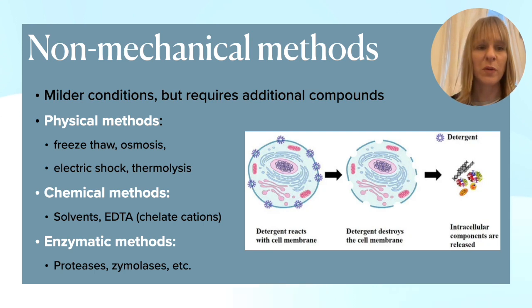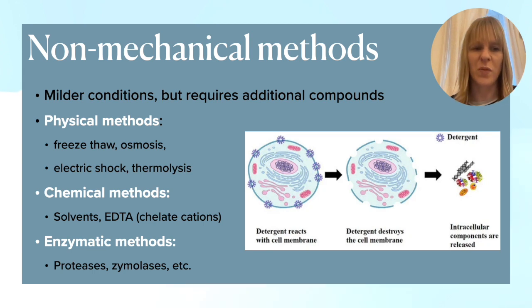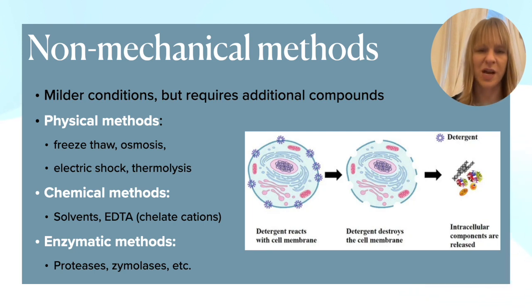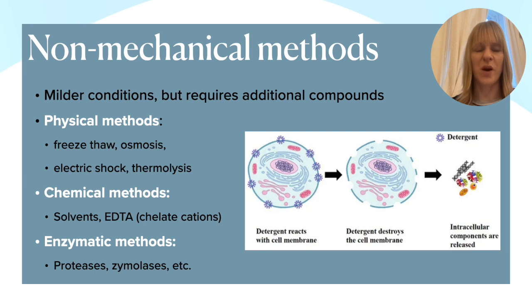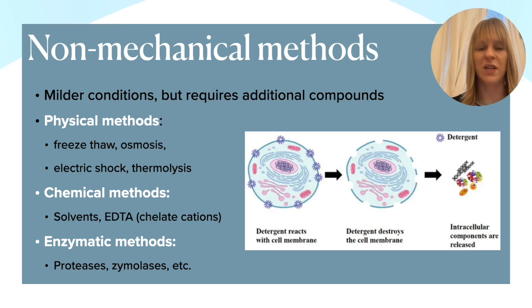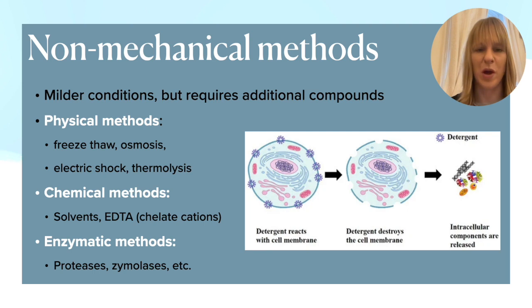The physical methods you can work with include freeze-thaw, osmosis, thermolysis, or electric shocks. The more popular chemical methods include organic solvents or charged compounds like detergents. For example, EDTA chelates cations that are very important in keeping cells stable, so it destroys the cell membrane by drawing away cations crucial to cell stability, slowly releasing the intracellular components you're after.